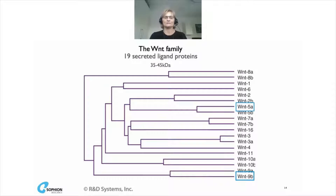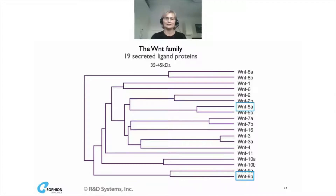Here you see a phylogenetic tree of mouse Wnt genes. Wnt signaling and ion channels has been the focus of a collaboration between King's College London and Sophion Bioscience. Two variants highlighted are Wnt subtypes 5a and 9b, which I tested in the study with Professor Amir Ahmed, who will now take over the presentation.